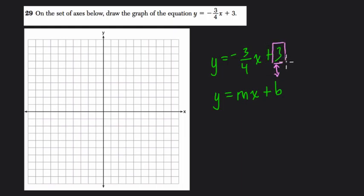b matches 3. And m, in this case, matches negative 3 fourths. And m is your slope and b is your y intercept.